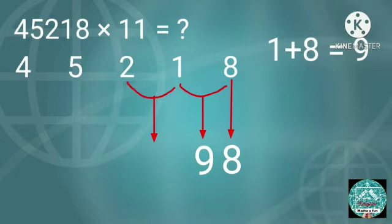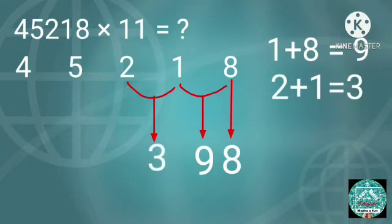Then add 2 and 1. 2 plus 1 equals 3. Write 3 to the left of 9.